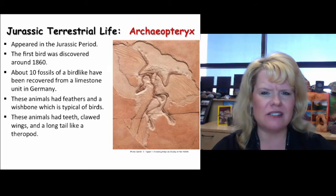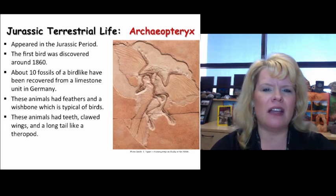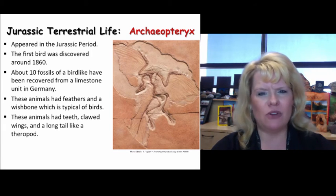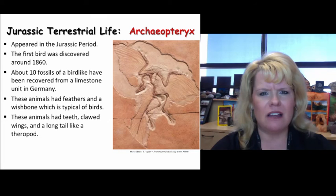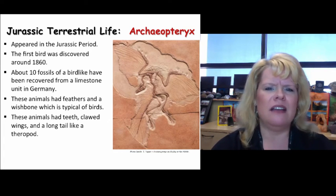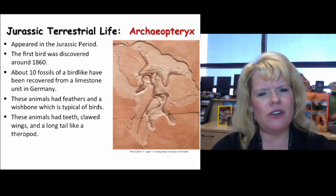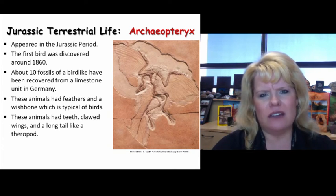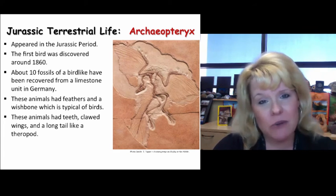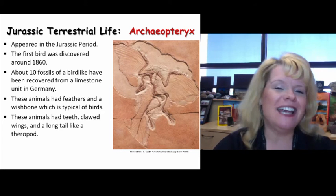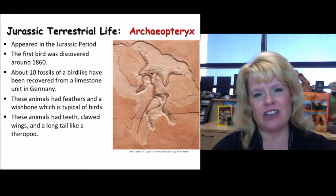Archaeopteryx is an important fossil of the Jurassic period because it represents the evolution of birds — thought to have evolved from theropod dinosaurs. Recall our discussion in the Triassic about Proto-Avis: there is turmoil in the paleontology world right now about where the first bird begins. We just don't have enough data on Proto-Avis to call it the first bird, but we certainly do for Archaeopteryx. That's the beauty of paleontology — it changes as discoveries are made.